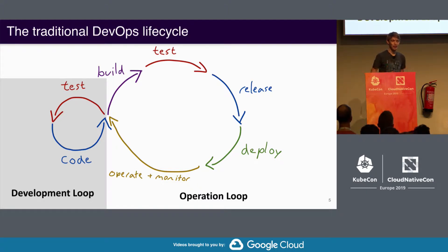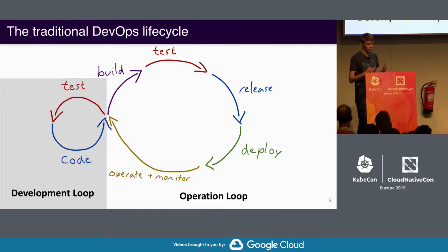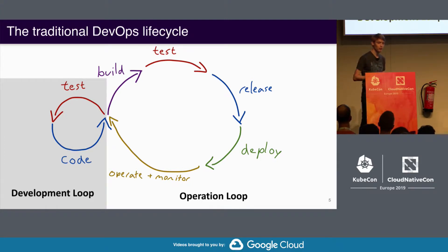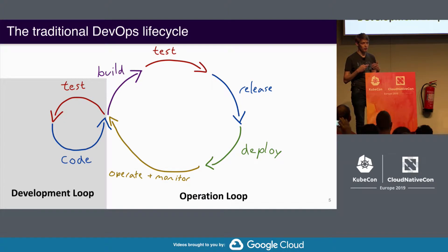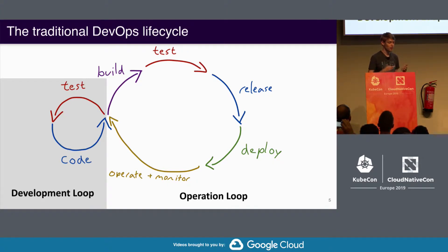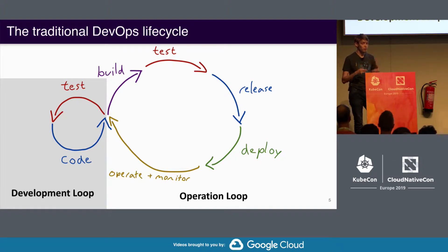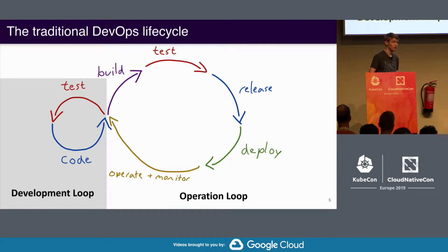Luckily, there is a lot of existing work on this. We have the traditional DevOps lifecycle, which you've probably seen in some variation, at least even at this conference. Basically you have a development loop where, as a developer, you're making a change, implementing a feature, in a constant interplay between coding and then running tests to see if your program still runs and does what it should. Once you're done, you move to the operations loop where you build it, test it with a far bigger test suite, and then release it — basically commit it into your actual code base. And from there you deploy your functions to the actual production environment, and from there you start operating and monitoring.